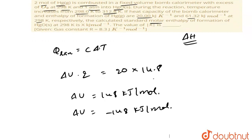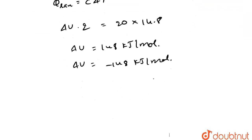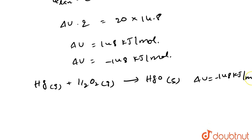By this, if we wrote the mercury equation, what it will form? Gaseous mercury reacts with half moles of gaseous oxygen, then it will form mercuric oxide HgO which is solid. Here the delta U value is minus 148 kilojoule per mole.